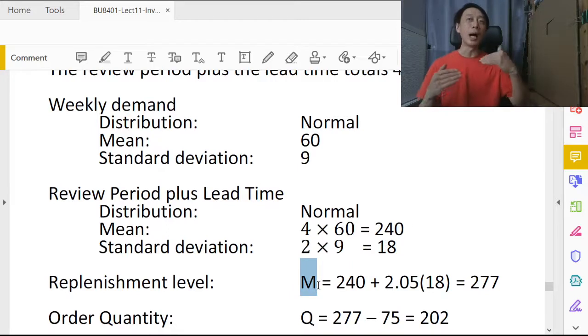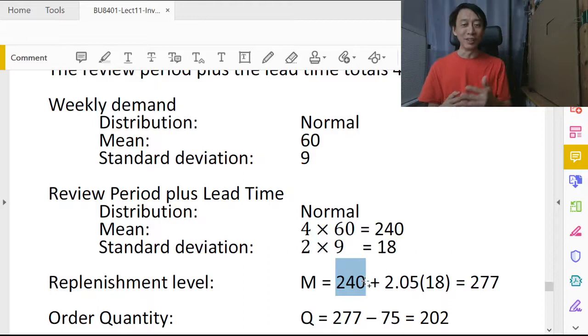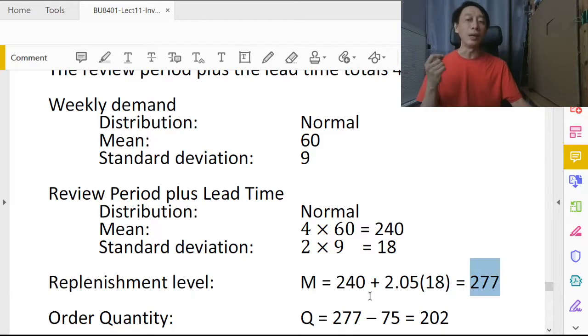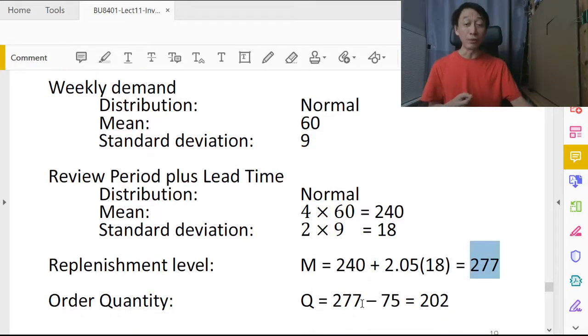So we can then determine M, the target inventory level, which is the mean demand during the protection level plus z value taken from table or calculator times the standard deviation during protection interval. So we get 277.